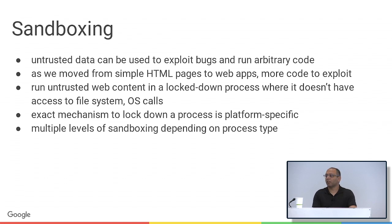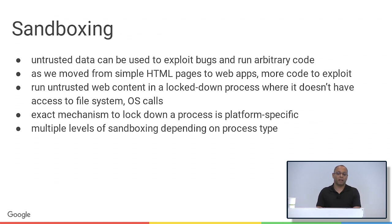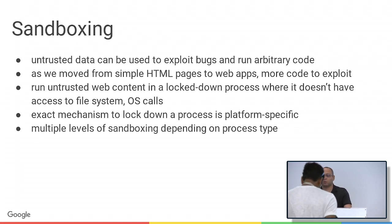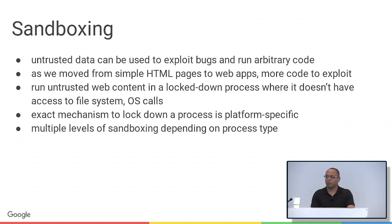Since untrusted data can be used to exploit bugs and execute code on your system, we need to guard against that. In the beginning, rendering engines were pretty simple because it was just rendering. But as we moved to web apps and more complicated browser engines to support that, there are a lot of extra vectors to exploit your system. So we moved all this code that operates on untrusted data into sandboxed processes, which means it doesn't have access to your file system or OS calls. The exact mechanism is platform-specific — we have sandboxing code specific to Android, Mac, and Windows — and we often work with OS vendors to add new capabilities to further lock down these sandboxes.